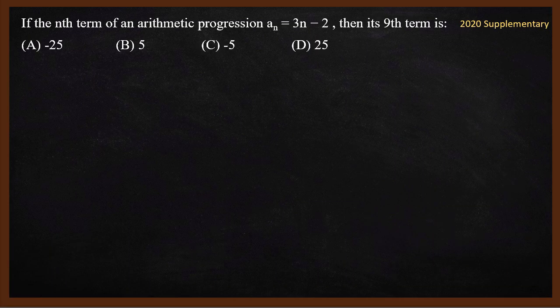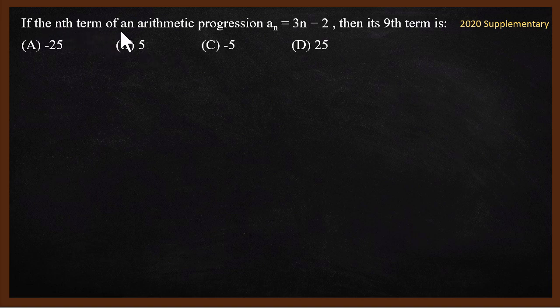What is the first question? First question is arithmetic progression from 2020 supplementary exam. If the nth term of an arithmetic progression aₙ is given as 3n - 2, then its ninth term is what?